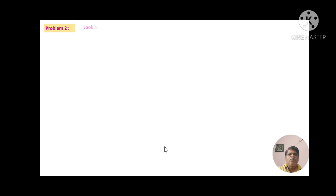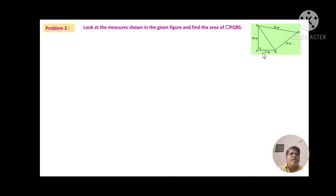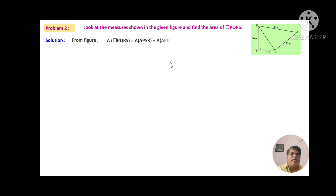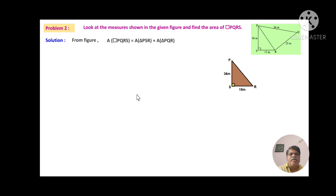Problem number 2: Look at the measures shown in the given figure and find the area. From the figure, area of quadrilateral PQRS equals area of triangle PSR plus area of triangle PQR. We will first find the area of triangle PSR and then triangle PQR.